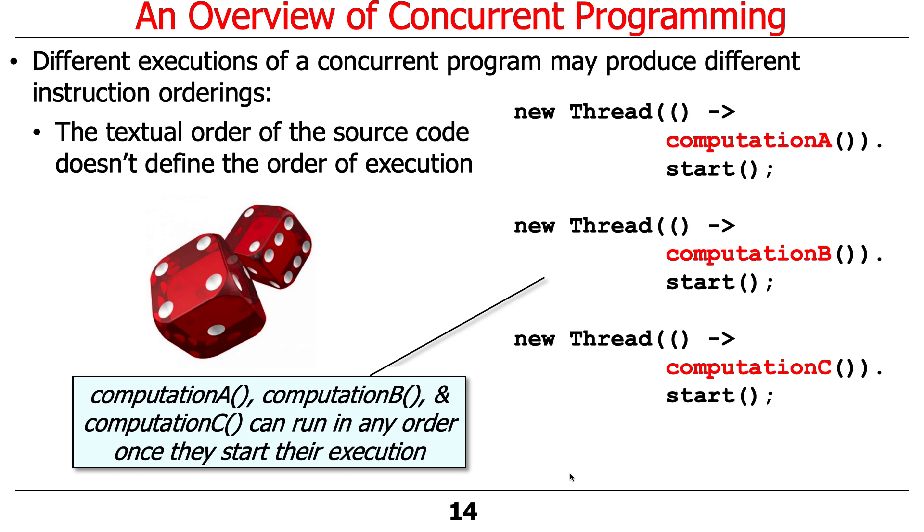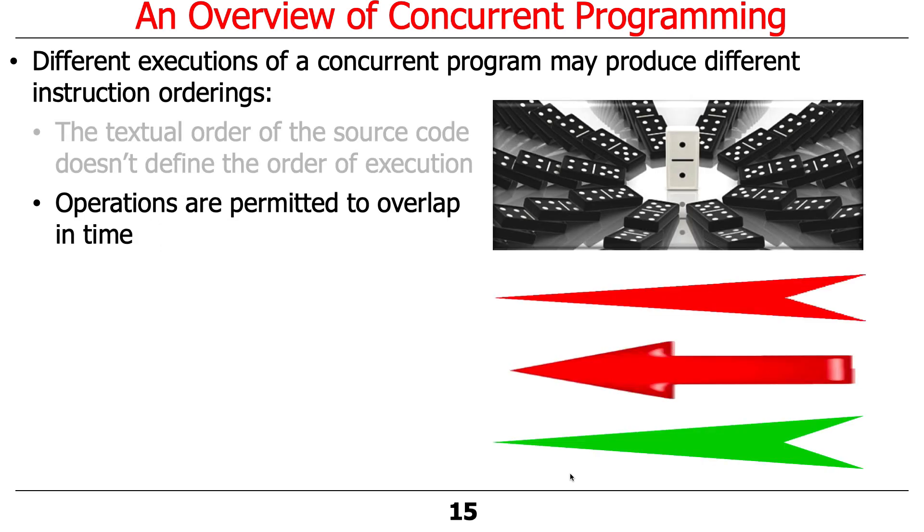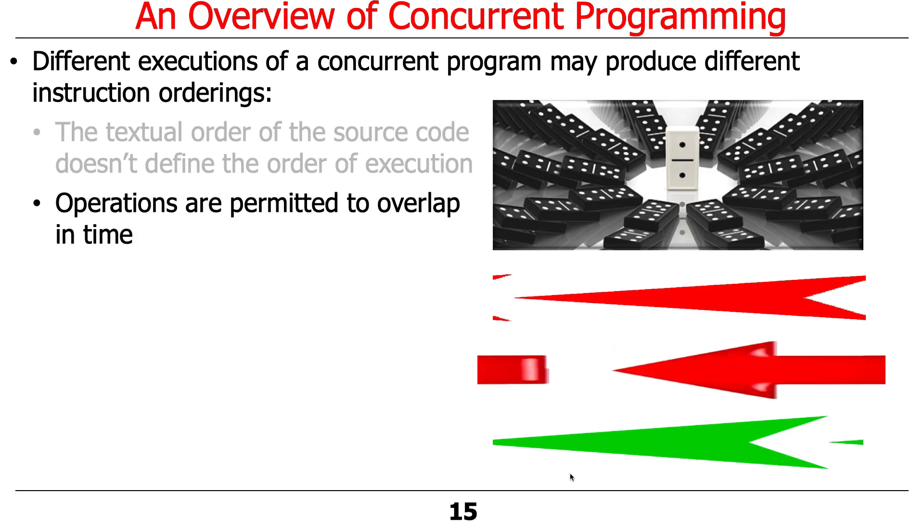Unless, of course, you do extra things behind the scenes with synchronizers. But let's ignore that for now. So the key point is we don't really know, we don't really care, actually, at one level, whether A goes before B goes before C. That's non-deterministic. And it's really up to the operating system and the hardware and other layers of software and the software stack, like the virtual machine and so on, to decide what order things are going to run in.